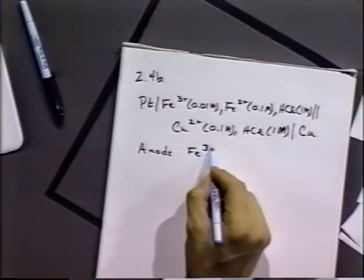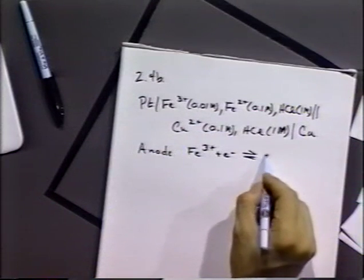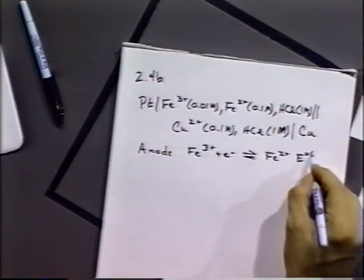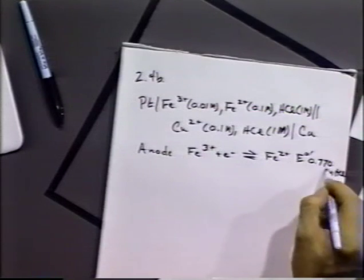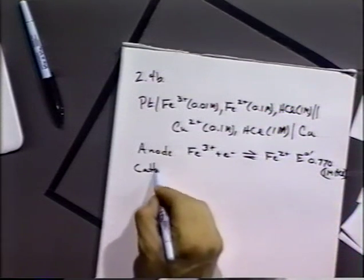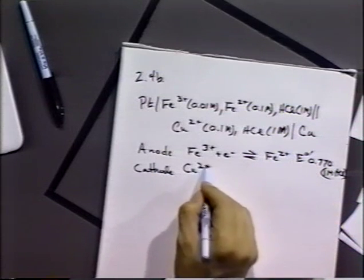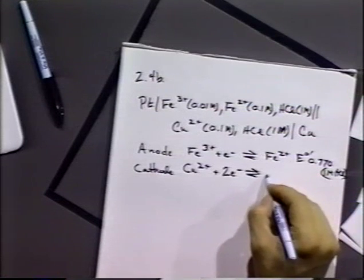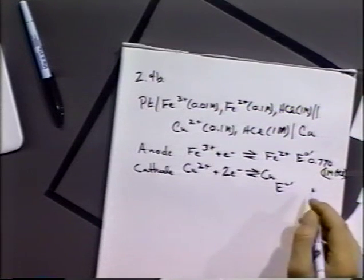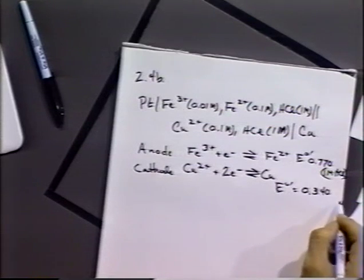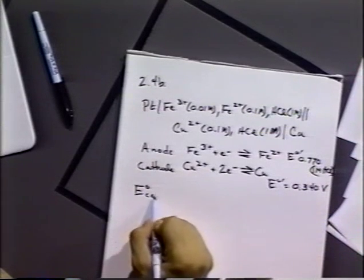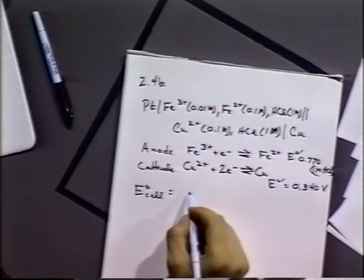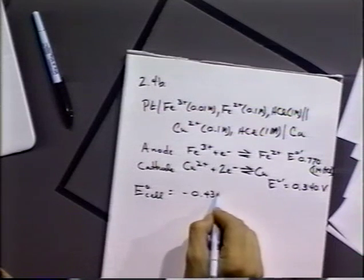Well the anode is always equal to, or the anode is always the one on the left and typically that's the convention. That E0 prime is a formal potential because it relies on the fact that it's in 1 molar HCl cell. And that's what we see, the cathode is copper 2 plus plus 2 electrons going to copper. The formal potential for that particular is 0.34 volts. So here's the standard cell potential, E0 cell is as always, the cathode minus the anode and that would be equal to minus 0.43 volts.